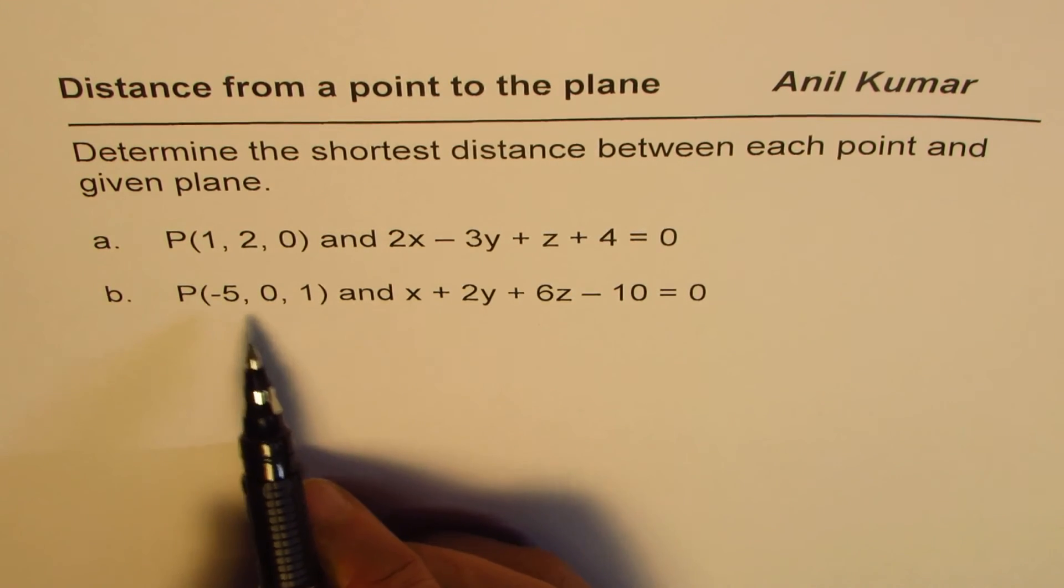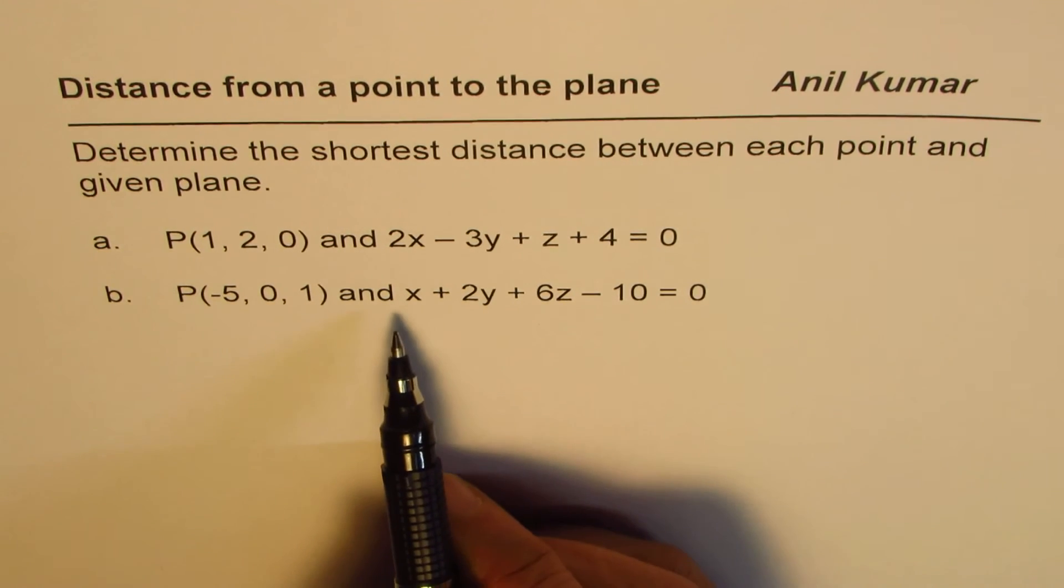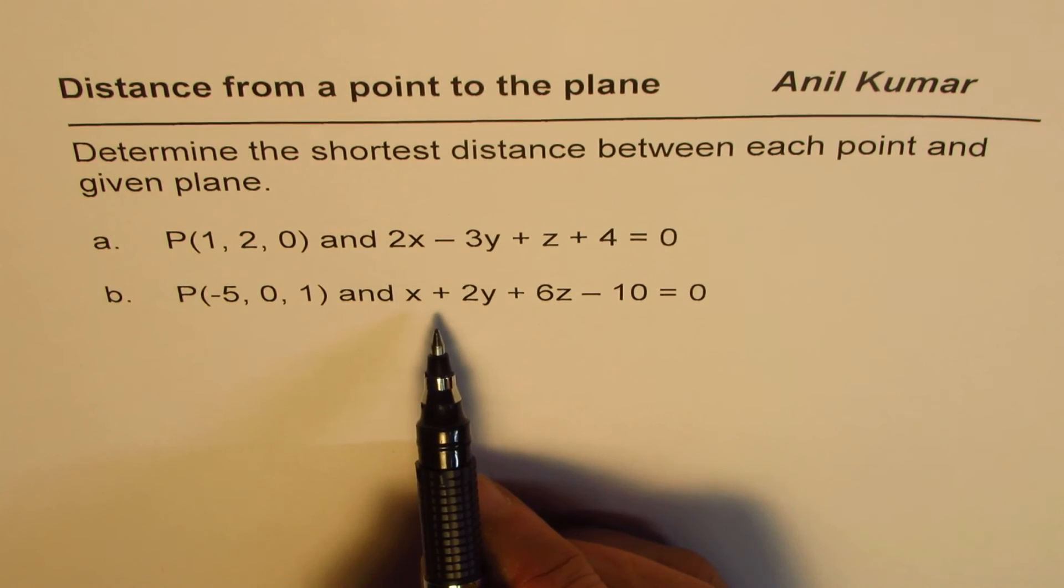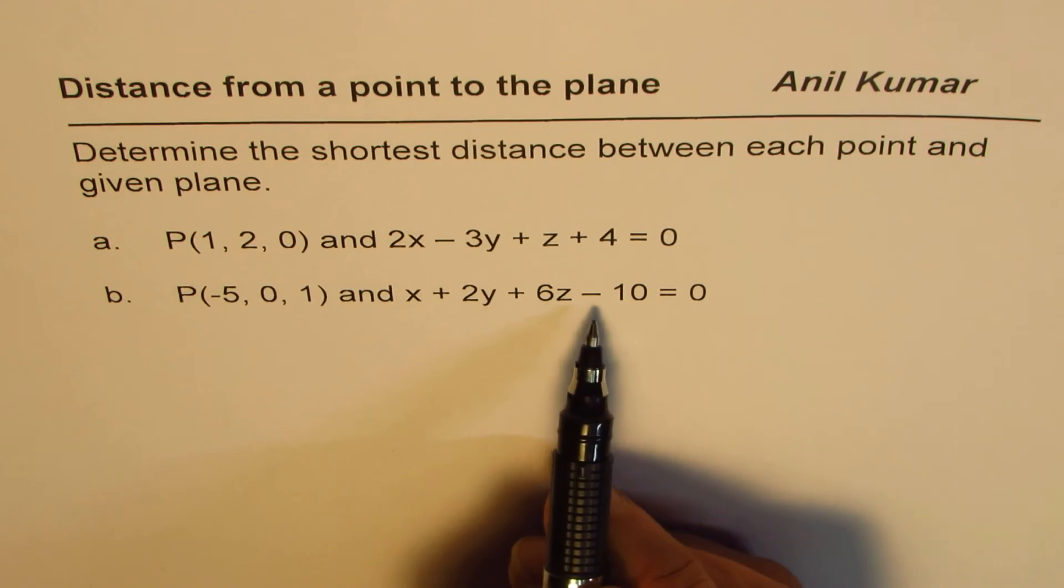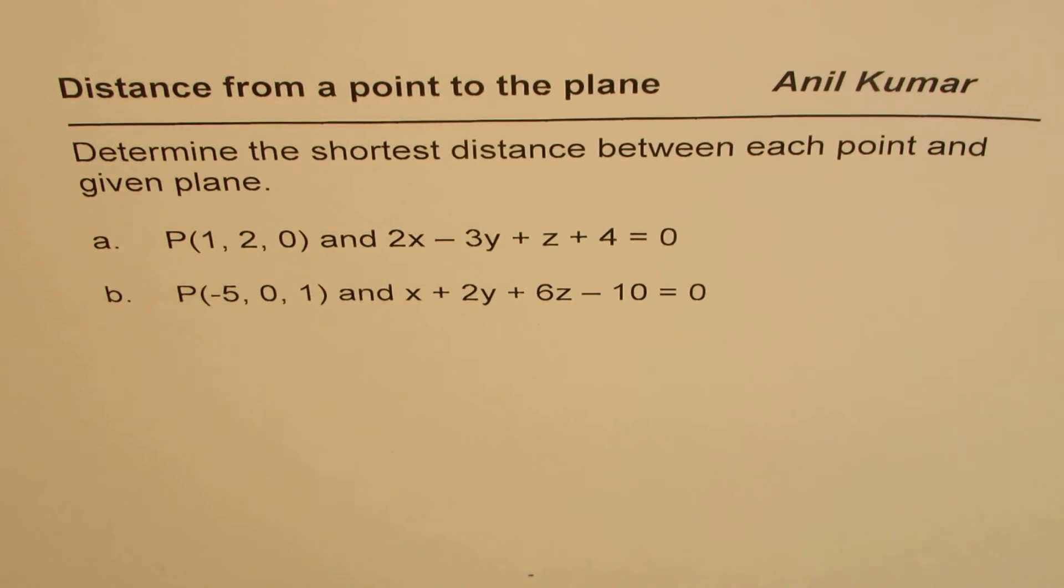The second one is, point is minus 5, 0, 1 and the equation of the plane is x plus 2y plus 6z minus 10 equals to 0.